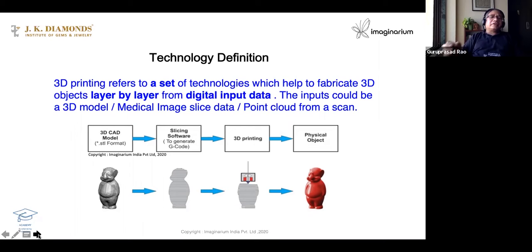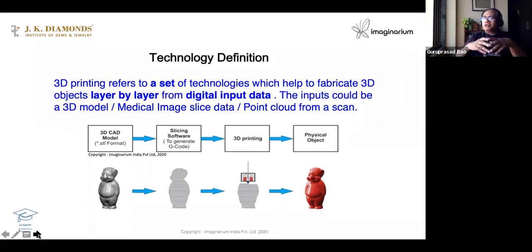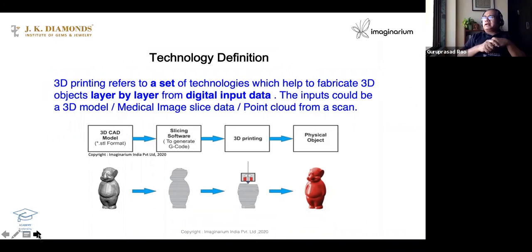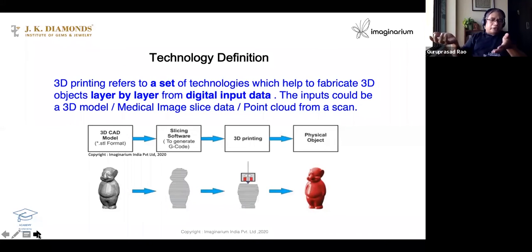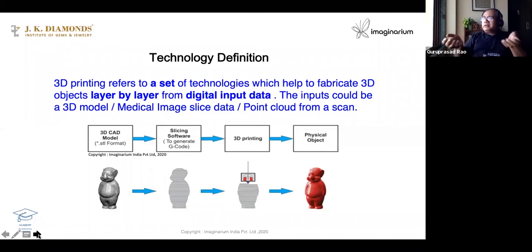What is the digital input data? It is the model you create on the computer. We can also use medically made data — we can scan an object, take the point cloud data, and recreate the model. You can use that. So a 3D model is important; without it, you cannot produce anything that is 3D printable.